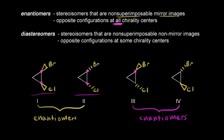Three and four are enantiomers with opposite configurations at all chirality centers. At this chiral center, bromine is on a wedge; on the other it's on a dash. At the other chiral center, chlorine is on a dash here and on a wedge there. So we have opposite configurations at both chirality centers.